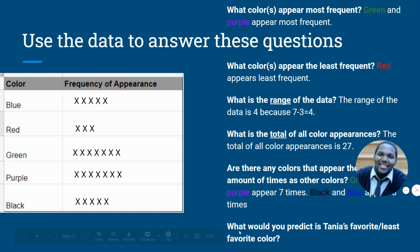Last question. What would you predict is Tania's favorite or least favorite color? Looking at this chart, can you draw an inference about what you think her favorite colors are? What do you think they are? Somebody post that in the comment section. Yeah, I agree. I think that her favorite colors are green and purple because they show up the most in her room. I think her least favorite color may be red.